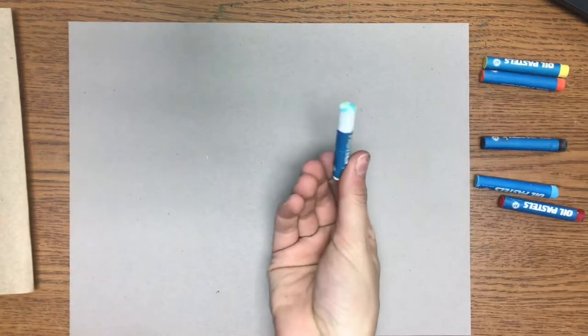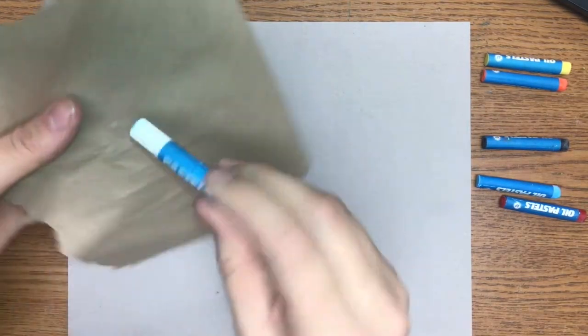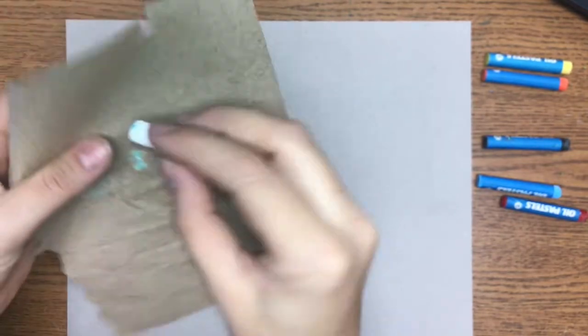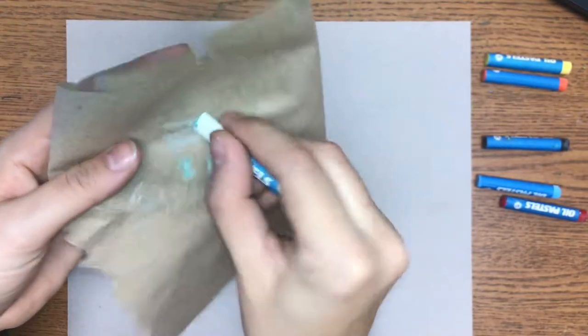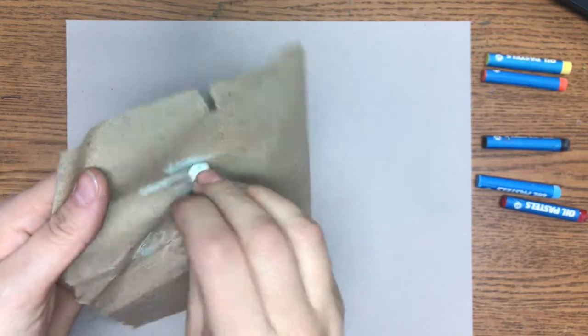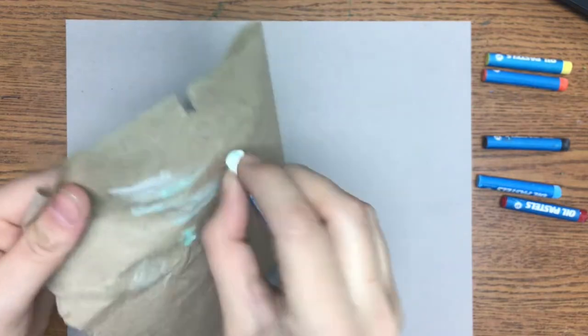After you get your name on your paper I'm going to show you how to clean off your oil pastel just in case you get one that has some other colors on it. Just like this you take your pastel and draw it onto your paper towel. Now this paper towel is going to come in handy because your white pastel is probably going to get dirty again, so keep it nearby.